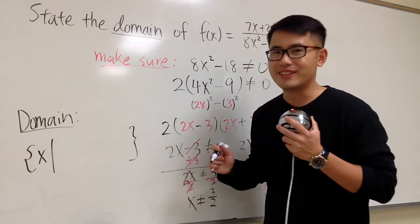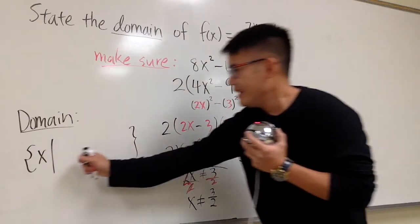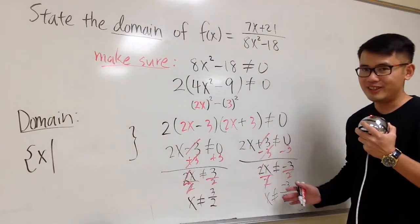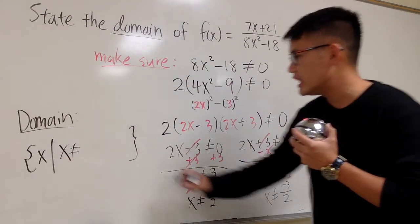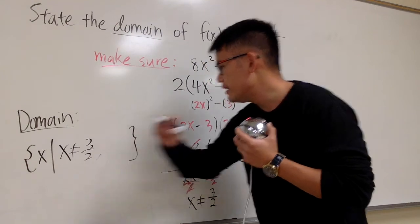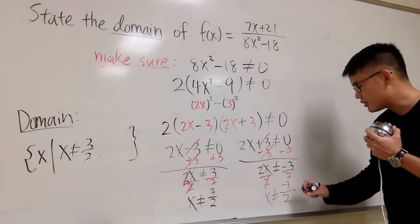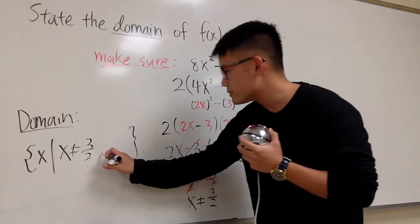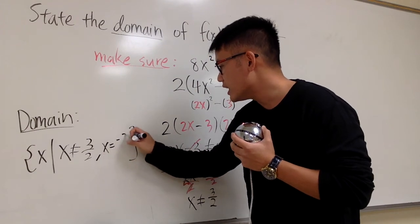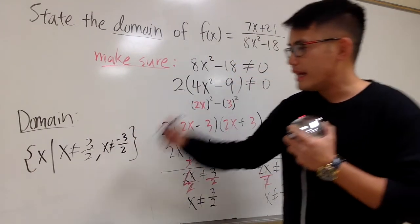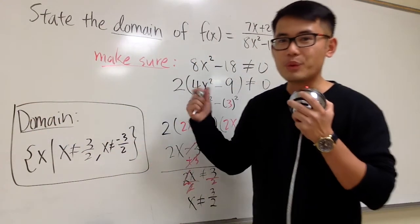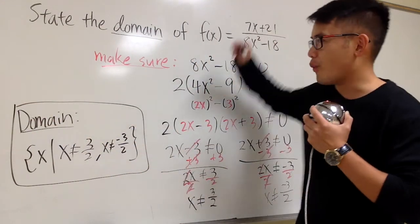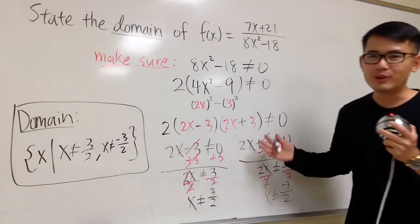In here, is the time that we are going to write down the conditions. x cannot be positive 3 over 2. And the other direction, the other condition is x cannot be negative 3 over 2. Okay? Cannot be. Anything else besides these 2 numbers are okay. So we are setting the restrictions for this function. And this right here is it.